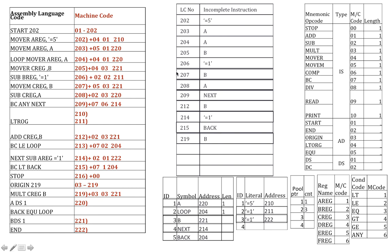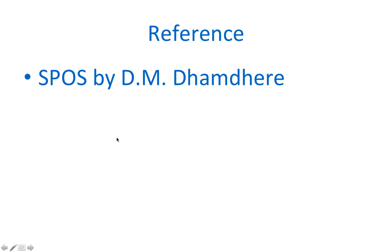So this is the result of the single pass assembler, which is the machine code generated by using the table of incomplete instructions, symbol table, and literal table. The reference for this was the book by Dhamdhere on Systems Programming and Operating System. Thank you.